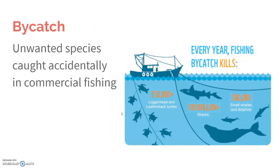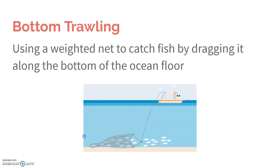Another issue related to overfishing is bycatch, which comes from just how efficient commercial fishing methods are. In addition to catching tons of targeted fish, these methods also take in other species — things like turtles, sharks, dolphins, and whales all get caught up in whatever net or long line is being used. If those animals require air, they get trapped or strangled.